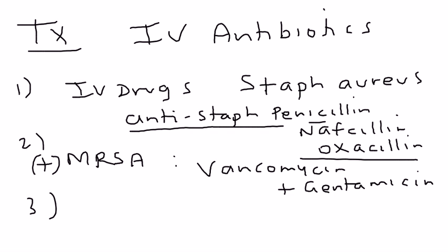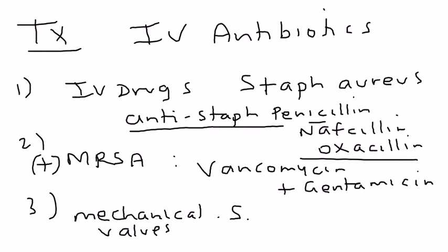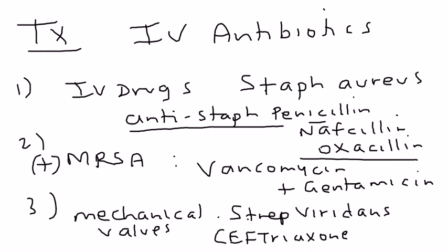The last one is when you have mechanical valves. When people have mechanical valves or previously damaged valves, there's an organism called Strep viridans, and that is treated with ceftriaxone with gentamicin. I think for most board questions you'd be okay with this list.